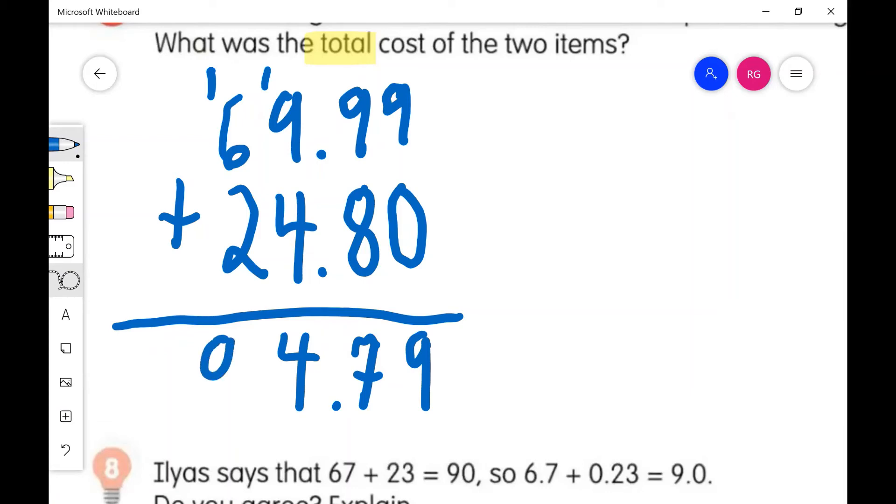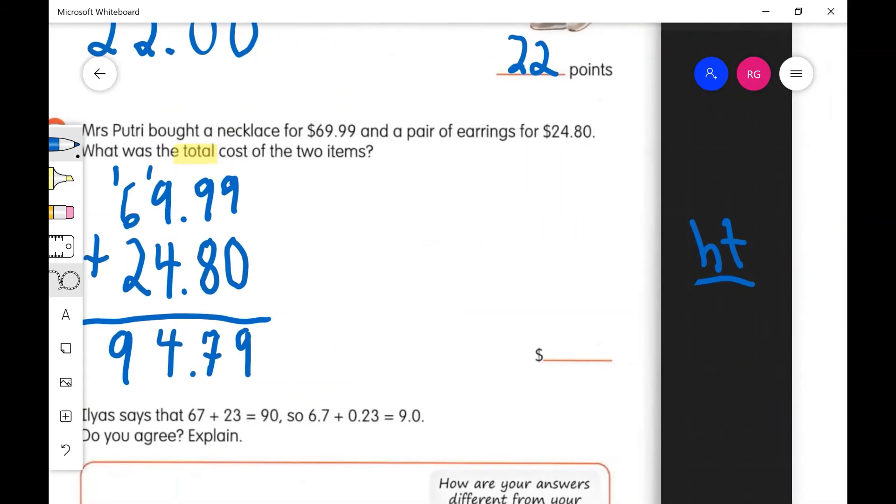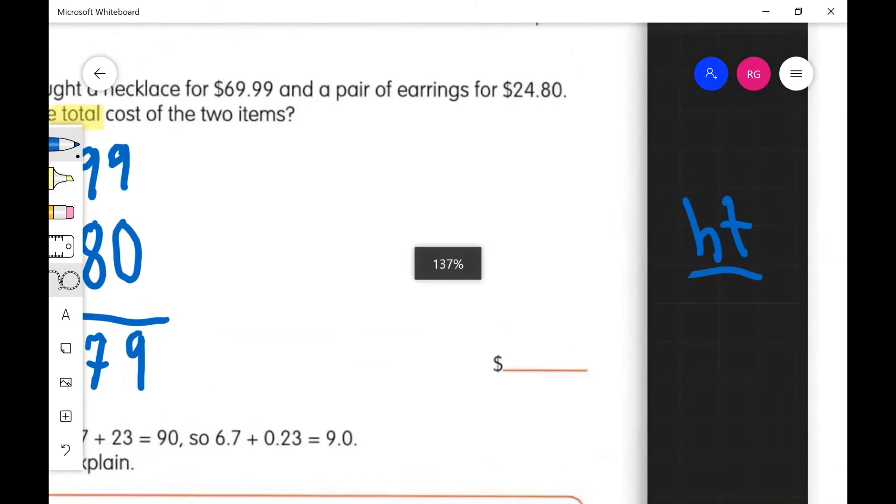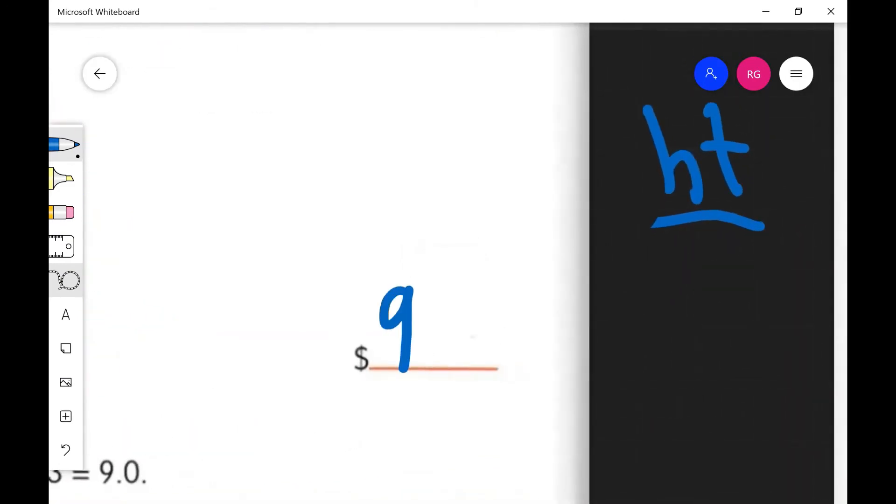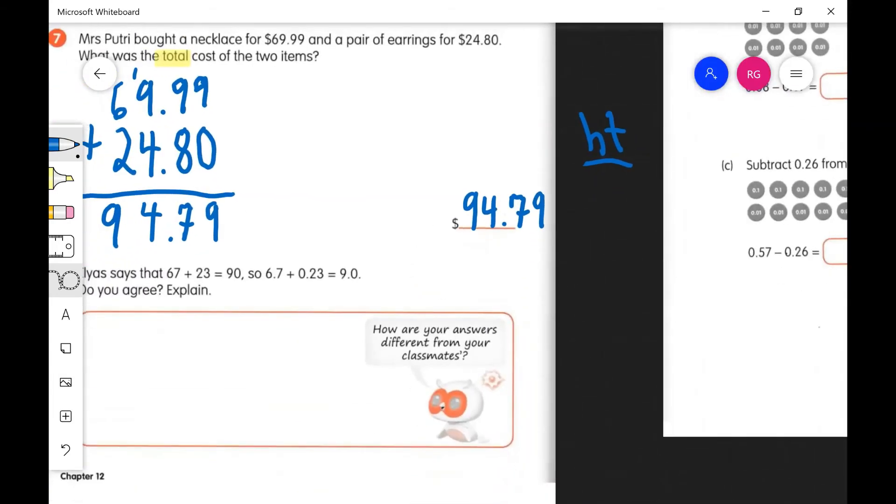94.79. How do you say that as a dollar amount? 94 dollars and 79 cents. Good job. That should be our answer. Let's move on to the next one.